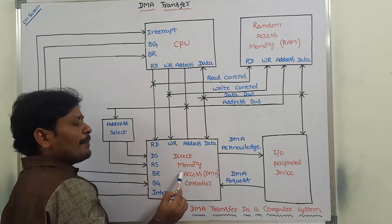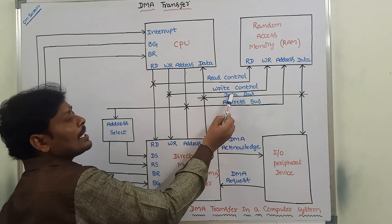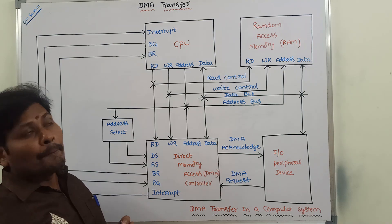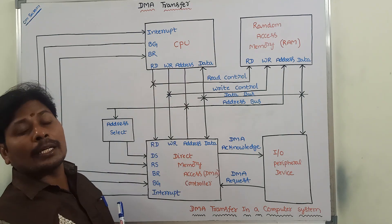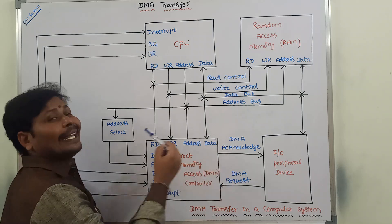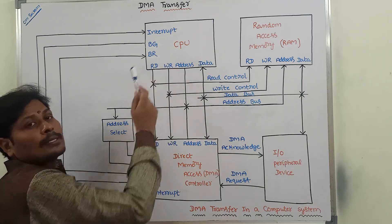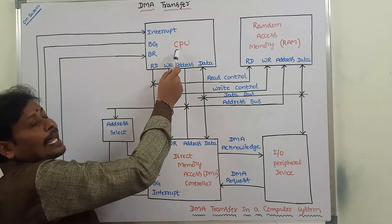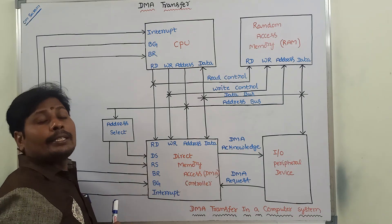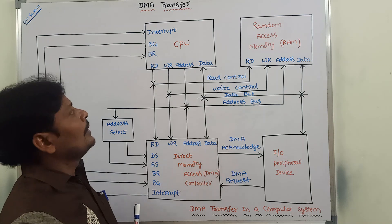CPU and DMA controller communicate with each other through the data bus and address bus. With the help of these two buses, both CPU and DMA controller are communicated with each other. The CPU sends the start command to the DMA controller to initialize it through the data bus.